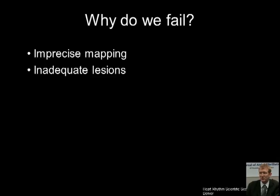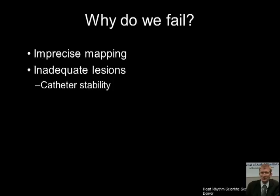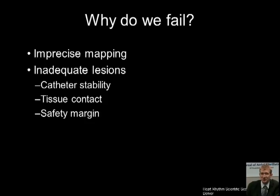So why do we get inadequate lesions? Part of this is undoubtedly due to catheter stability. It's very difficult to maintain adequate catheter contact throughout the cardiac cycle and throughout RF lesion delivery. The further problem is tissue contact. Maintaining adequate tissue contact is a problem. A number of solutions are being developed for this, such as pressure sensing catheters and robotic and magnetic systems, but as yet we are unable to get good tissue contact throughout the entire lesion delivery.